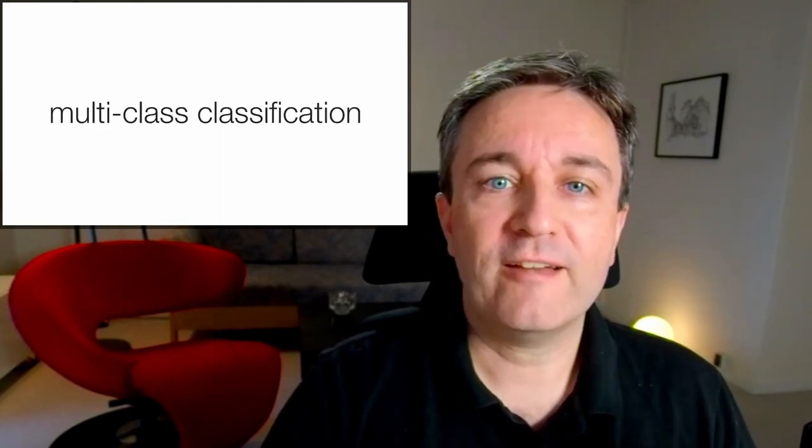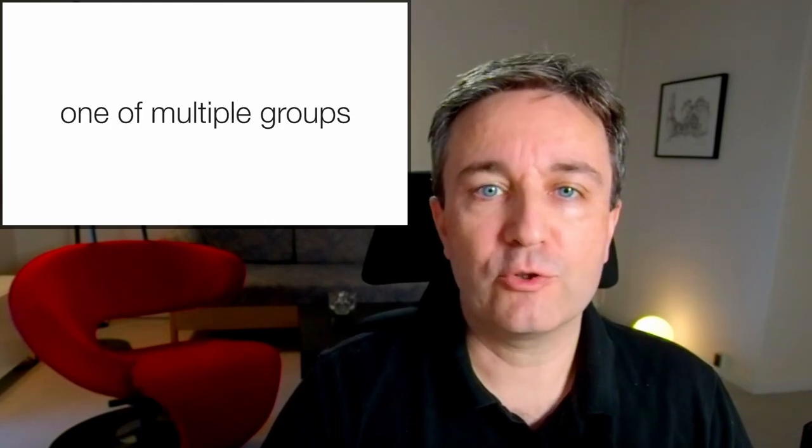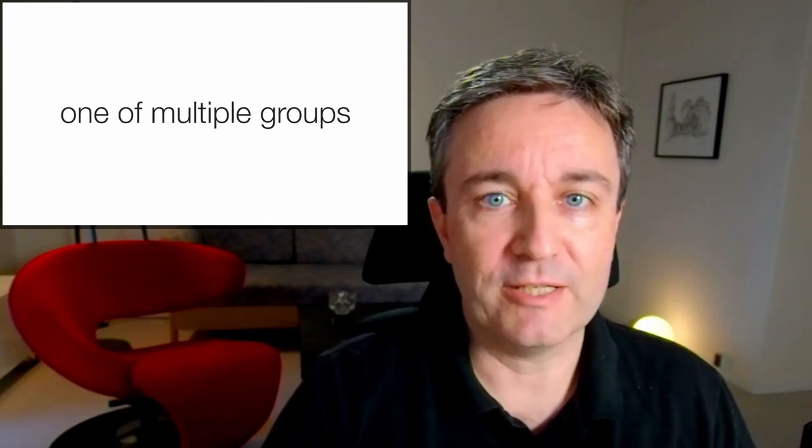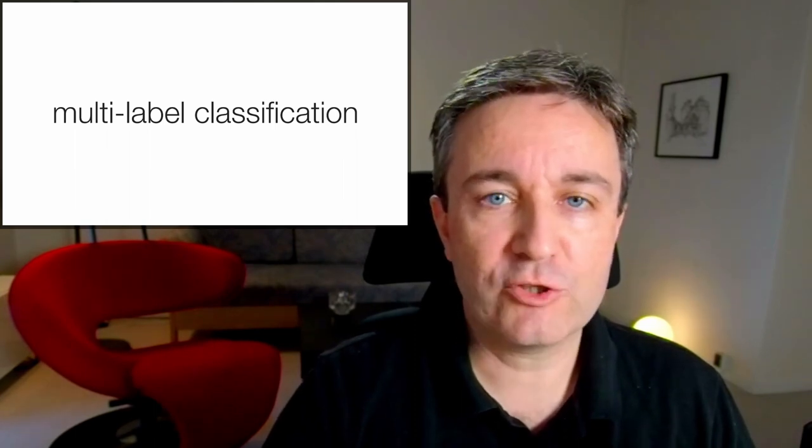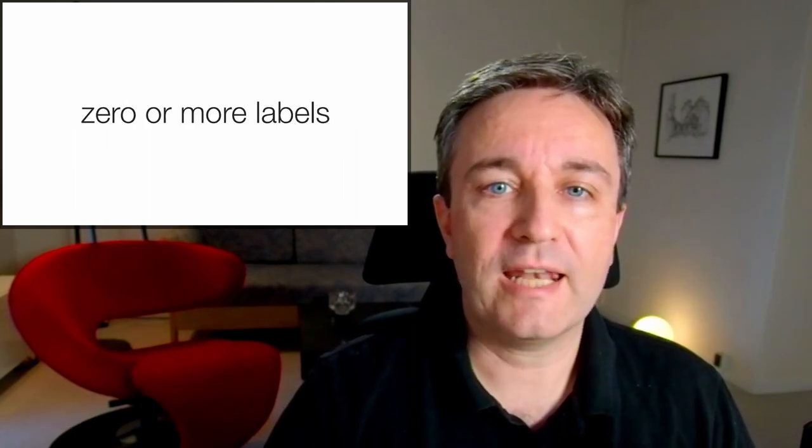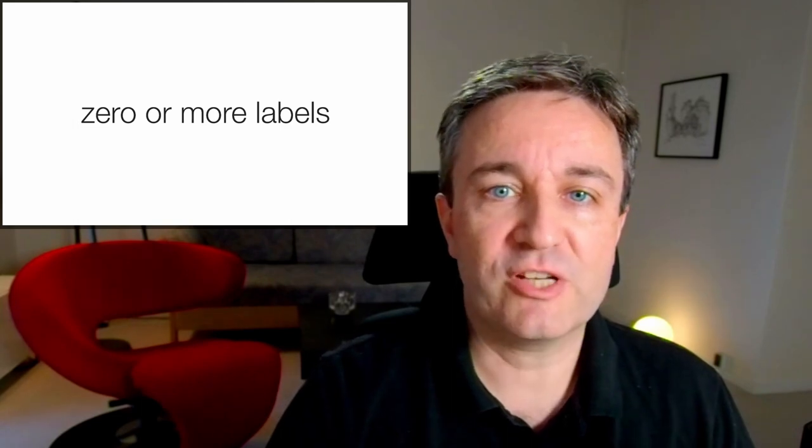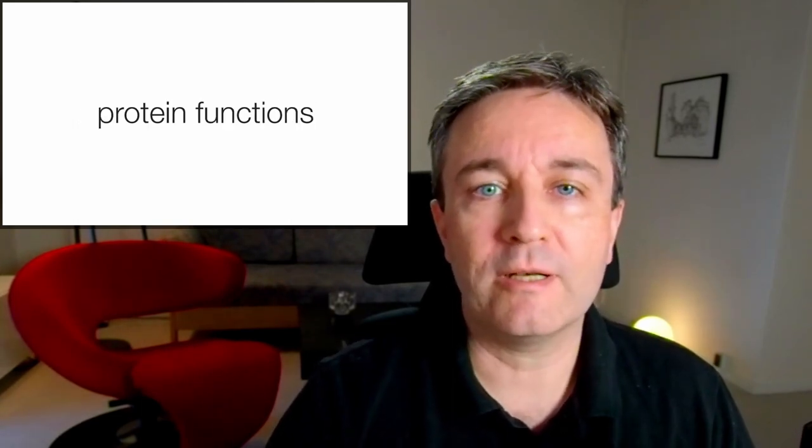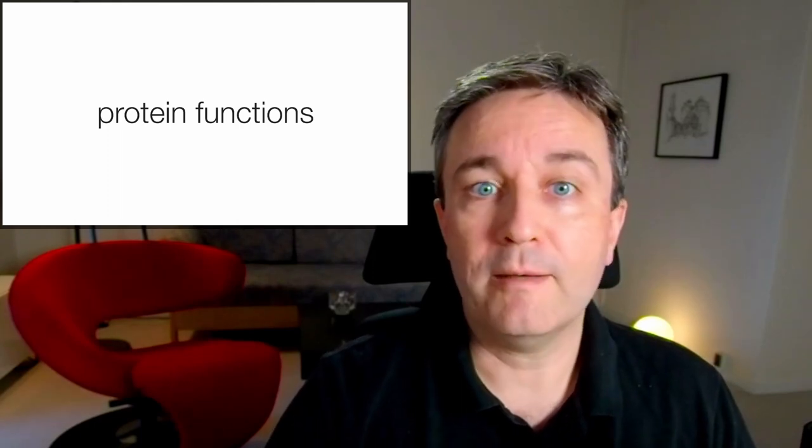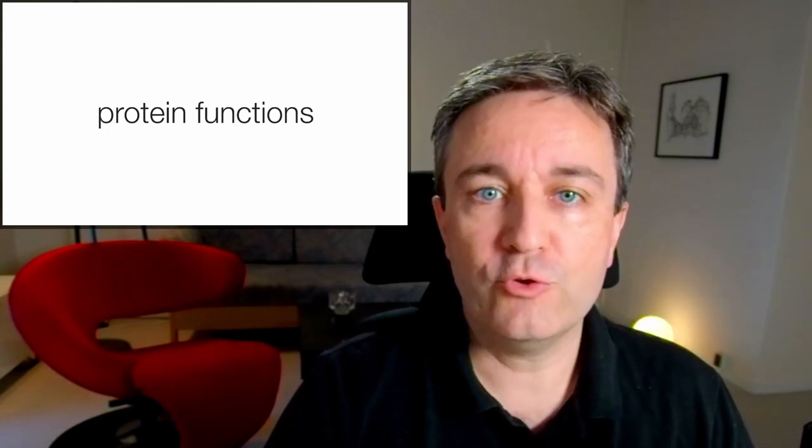You can also have multi-class classification, in which case you're trying to put each example into one of multiple different groups. And finally, you have multi-label classification, in which case you assign zero or more labels to each example. A good example of the latter is protein function prediction, where you will often want to assign multiple different GO terms to the same protein.